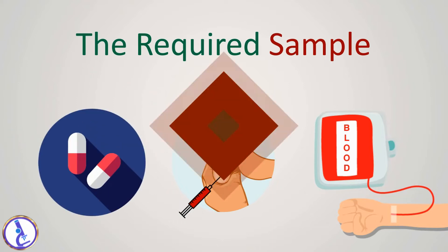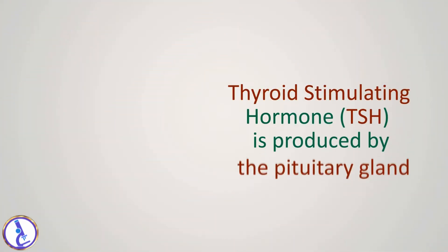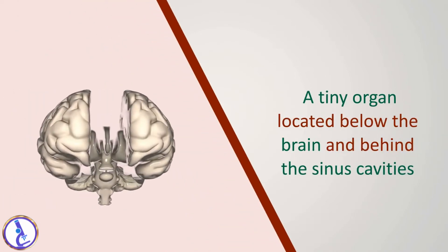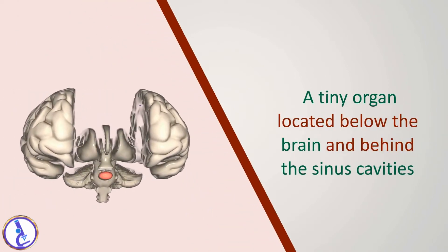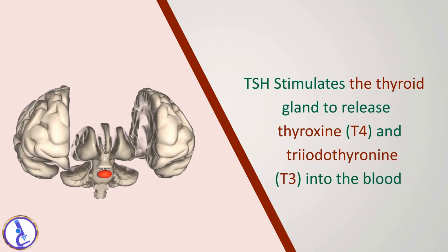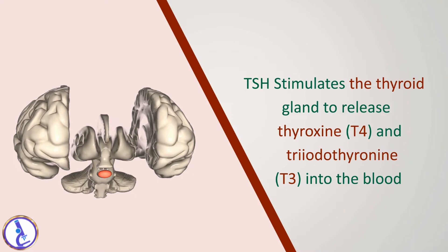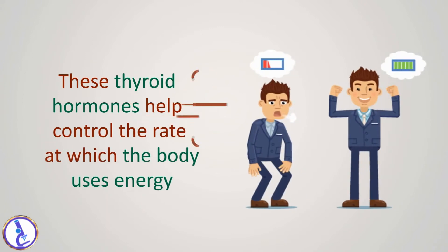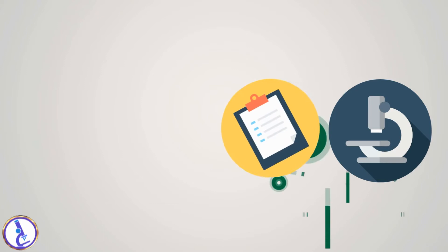Thyroid stimulating hormone TSH is produced by the pituitary gland, a tiny organ located below the brain and behind the sinus cavities. TSH stimulates the thyroid gland to release the hormones thyroxine T4 and triiodothyronine T3 into the blood. These thyroid hormones help control the rate at which the body uses energy.